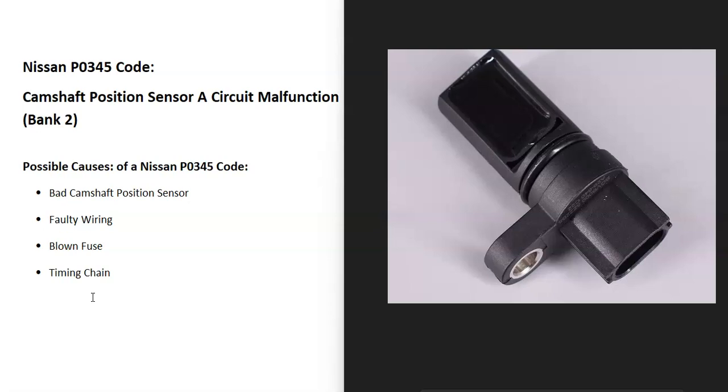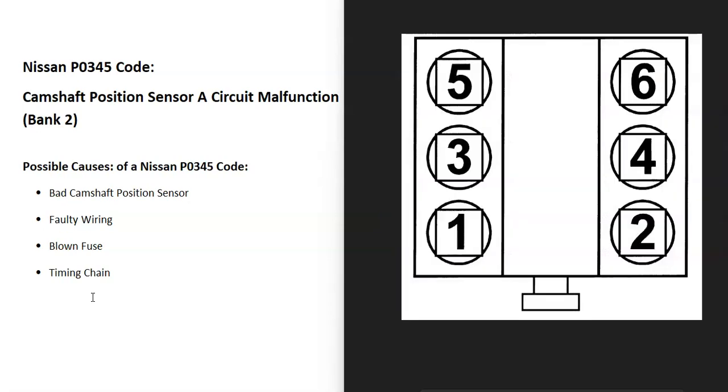In V6 and V8 engines, there are two banks. Bank 1 is always the side of the engine with the number one cylinder, and bank 2 is the opposite. So if you find the number one cylinder, that's bank 1, and the opposite is bank 2.